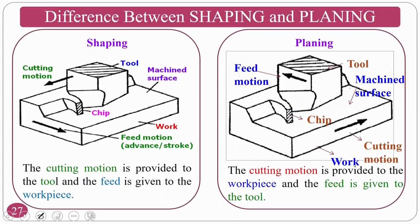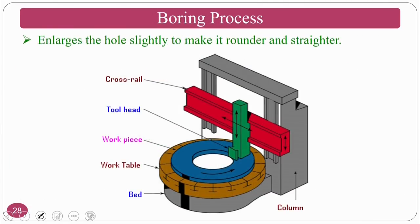In shaping, cutting motion is given to the tool and feed motion to the workpiece; in planing, cutting motion is given to the workpiece and feed motion to the tool. Shaping is for small workpieces; planing is for large workpieces. Another process is boring — boring is nothing but the enlarging of an existing hole. You can see an overview of the boring process, which enlarges the existing hole as per the drawing or customer requirement.